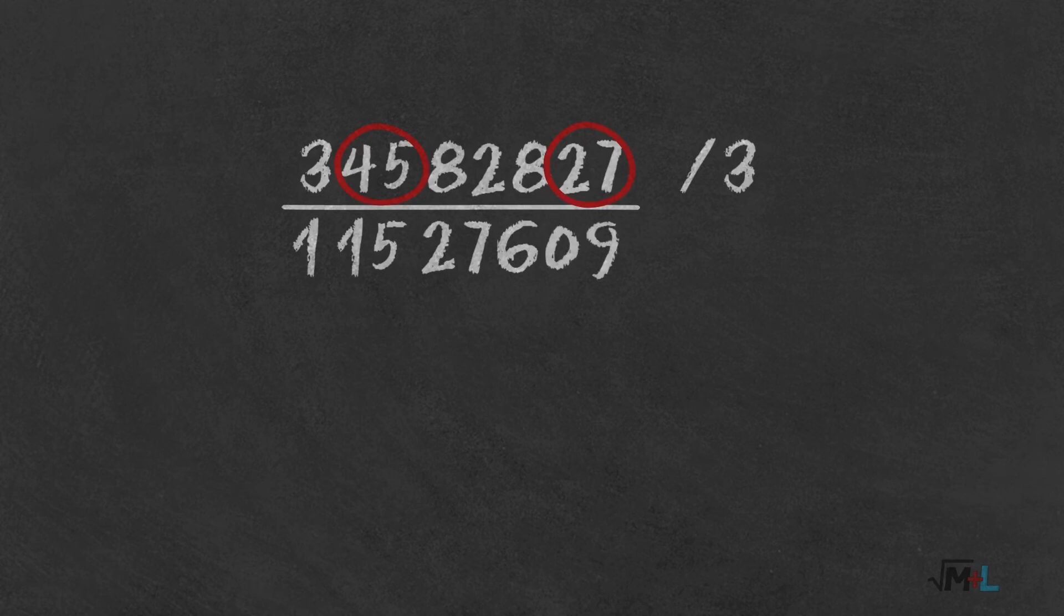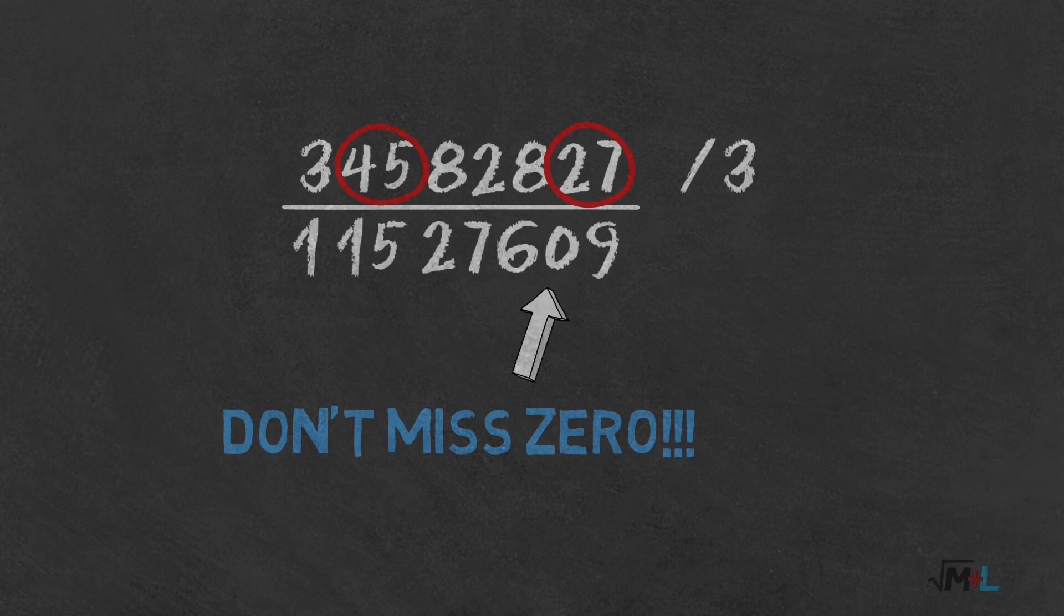And here is the same warning as in division by 2 video. While grouping and doing mental calculation, don't miss the zeros. 27 by 3 is 9, but you have to remember it as 0, 9. This happens only when group starts with 1 or 2.